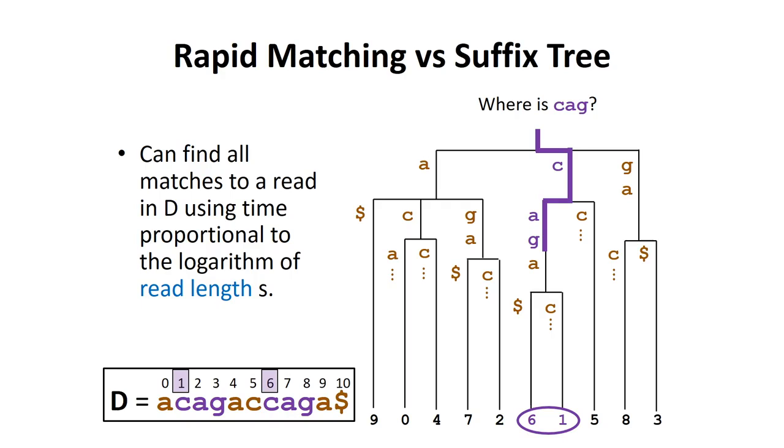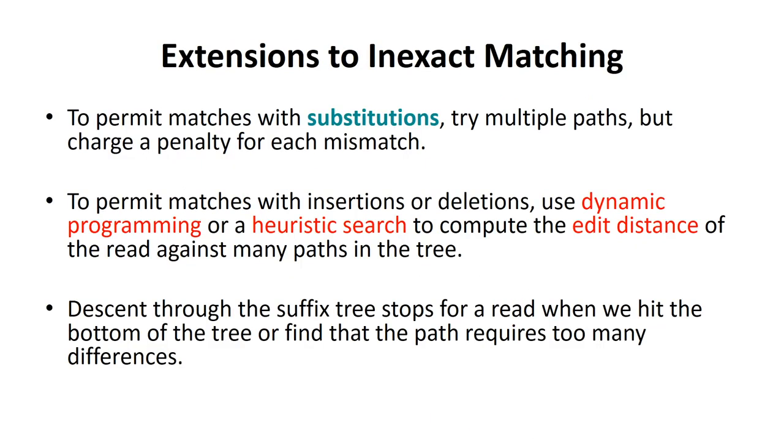We can modify the search algorithm to allow inexact matches. To allow base substitutions, we can follow multiple paths but charge a penalty for each mismatch. We can terminate the search within a subtree once the number of mismatches exceeds the maximum number of differences allowed. To facilitate inexact matches with insertions and deletions, we can use dynamic programming or a heuristic search to compute the edit distance of the read against many paths in the suffix tree.